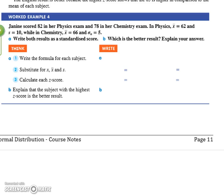For this worked example on z-scores, you have Physics and Chemistry. You have the standard deviations and means for both. Now question A says write both as a standardized score. What's the standardized score?